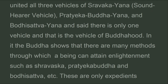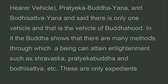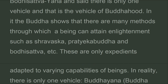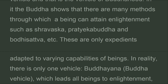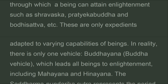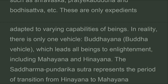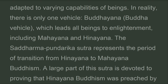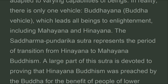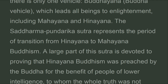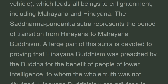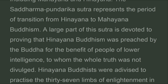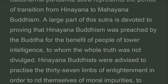The Buddha shows that there are many methods through which a being can attain enlightenment — sravaka, pratyekabuddha, bodhisattva — but these are only expedients adapted to varying capabilities of beings. In reality there is only one vehicle, buddhayana, which leads all beings to enlightenment, including Mahayana and Hinayana. The Saddharma Pundarika Sutra represents the period of transition from Hinayana to Mahayana Buddhism. A large part of the sutra is devoted to proving that Hinayana Buddhism was preached by the Buddha for the benefit of people of lower intelligence, to whom the whole truth was not divulged.